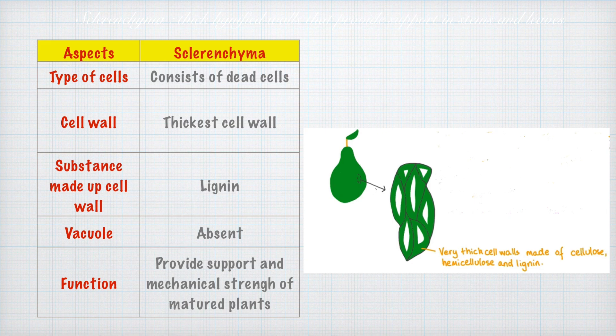Let us review the three types of ground tissue: the first one is parenchyma, the second one is colenchyma, and the third one is sclerenchyma.